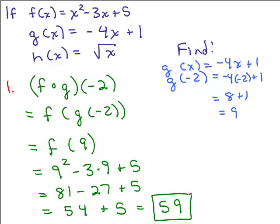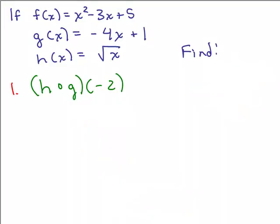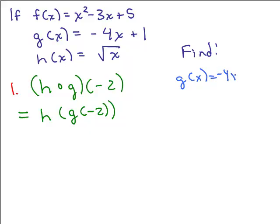So that's how we do f of g of negative 2. Here's another example using the same three functions — I'm asking for h of g of negative 2. This means h of g of negative 2, so I need to figure out what g of negative 2 is. Again, g of x is negative 4x plus 1, so g of negative 2 means plugging in negative 2 for x. This gives 8 plus 1, or 9 — exactly what we got before.